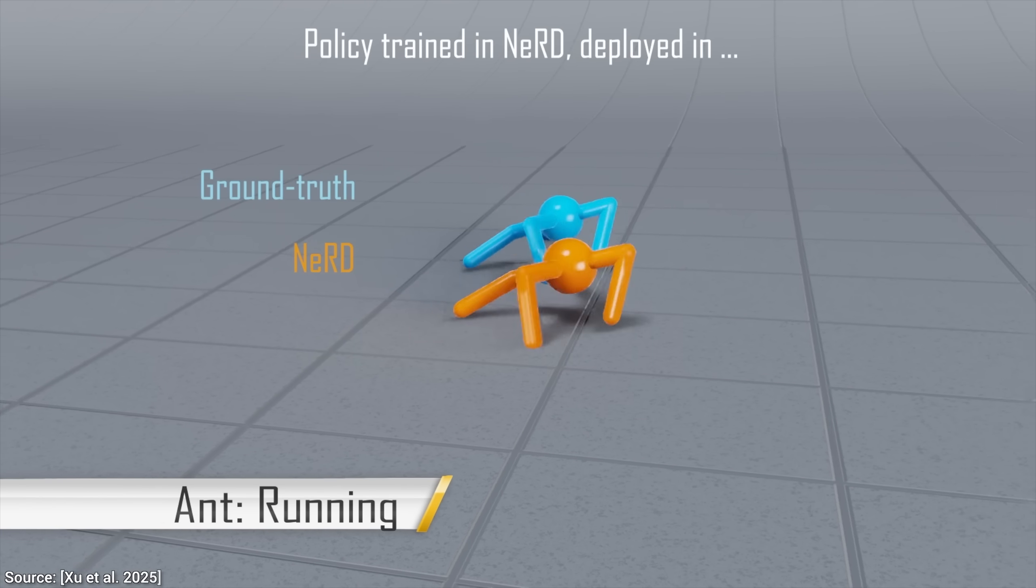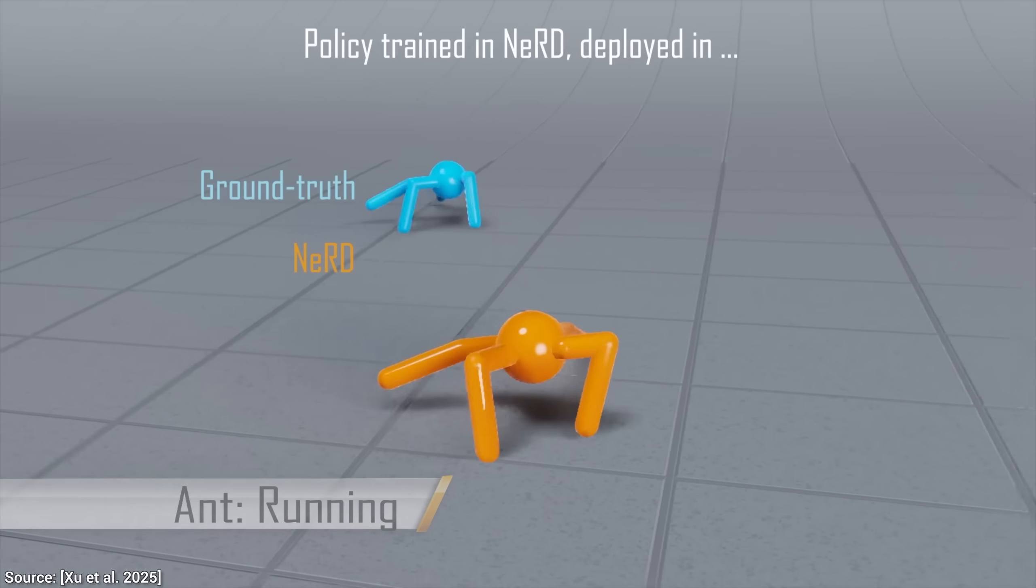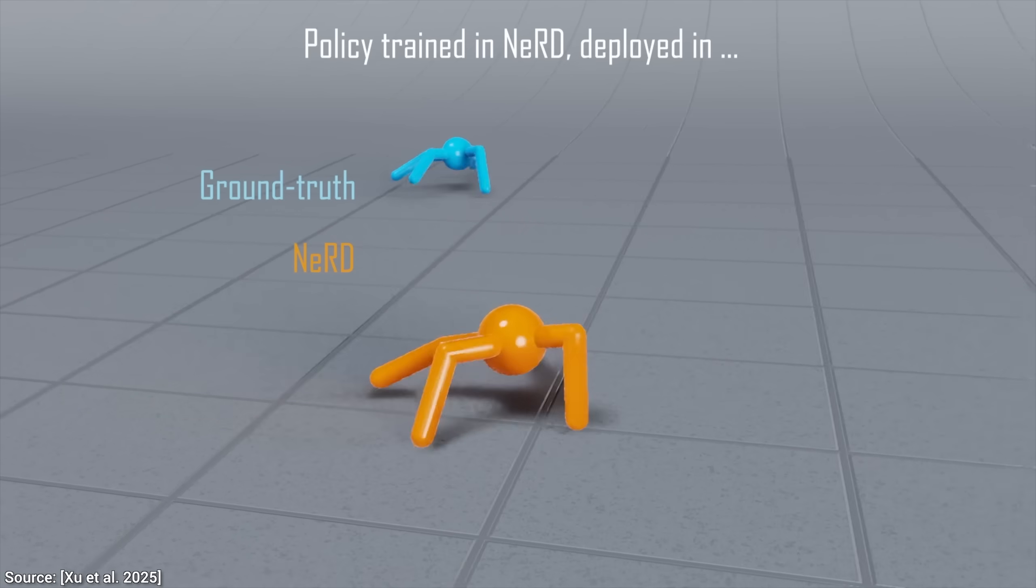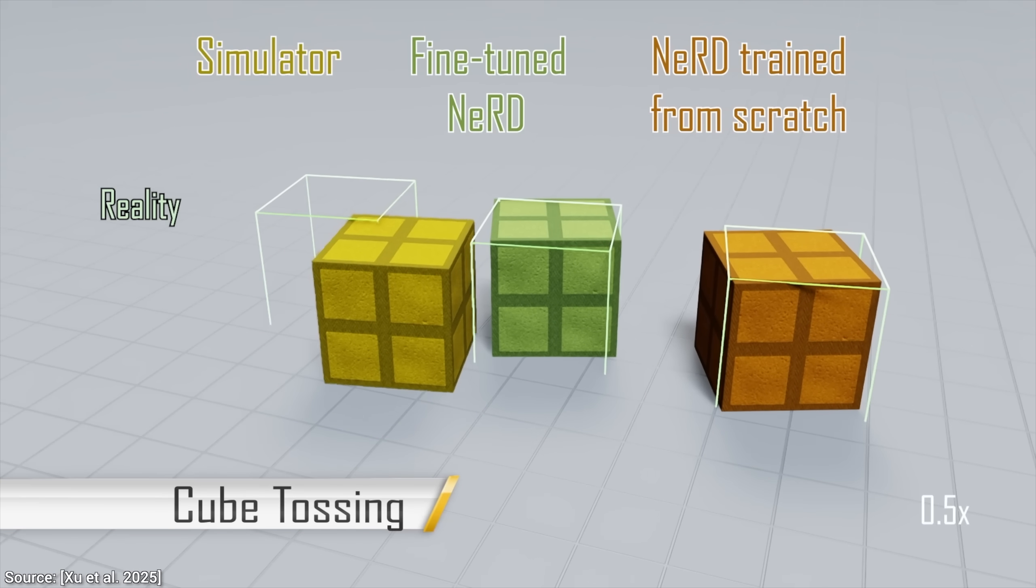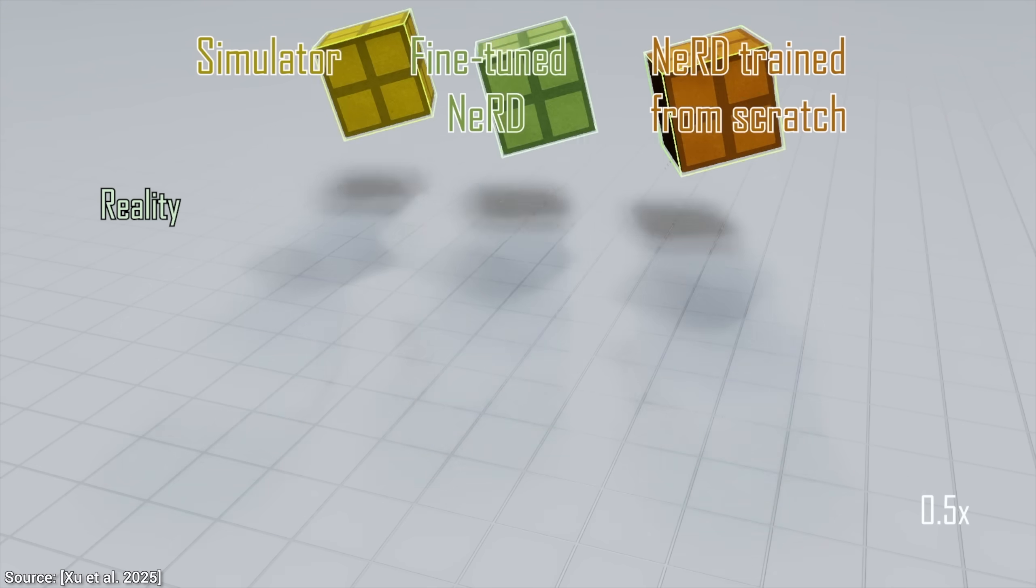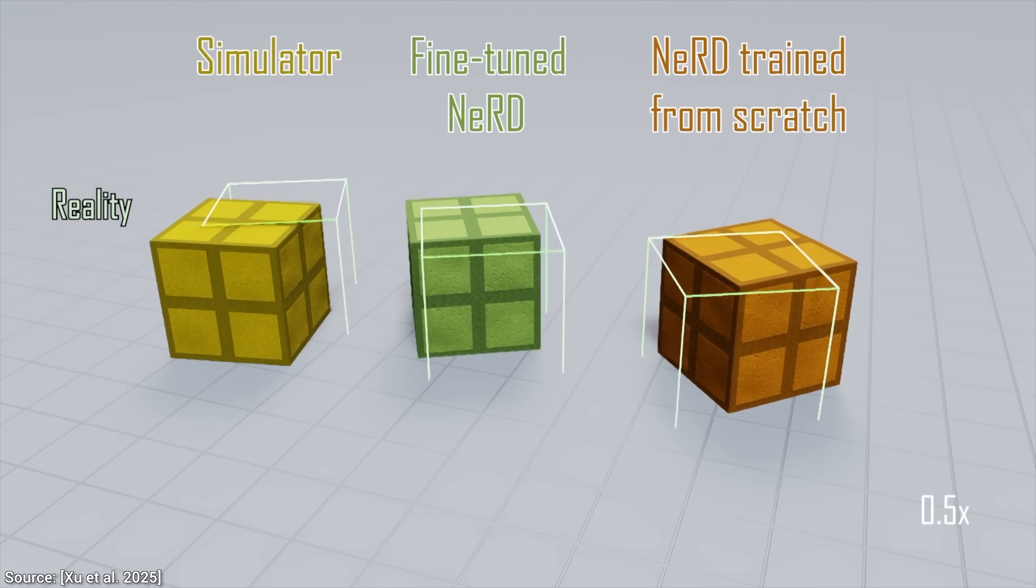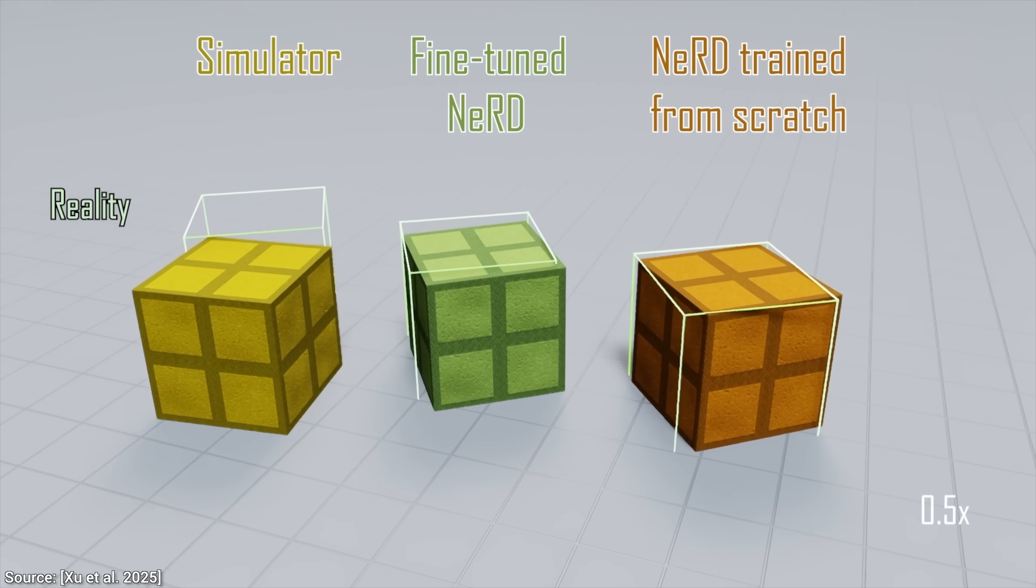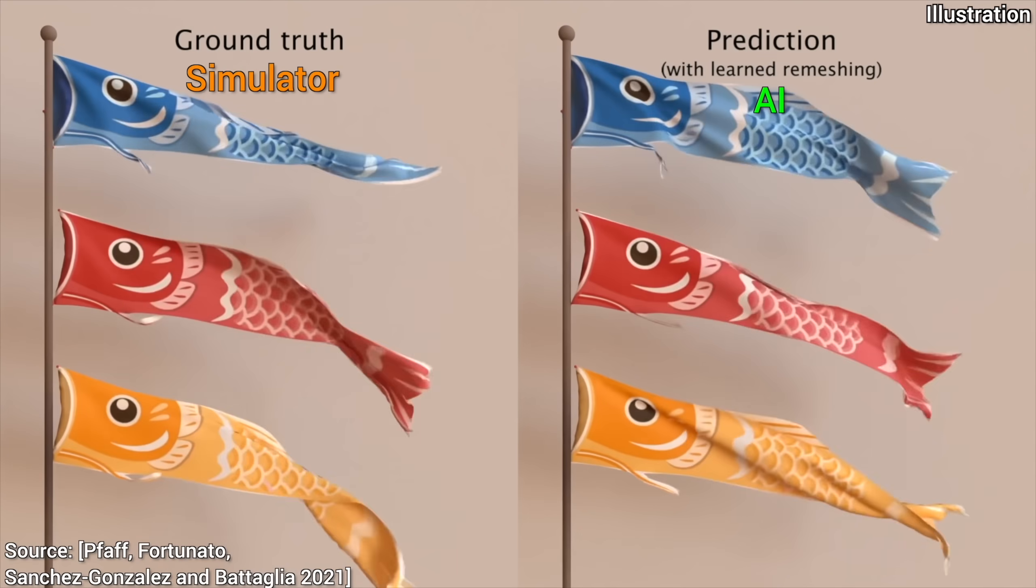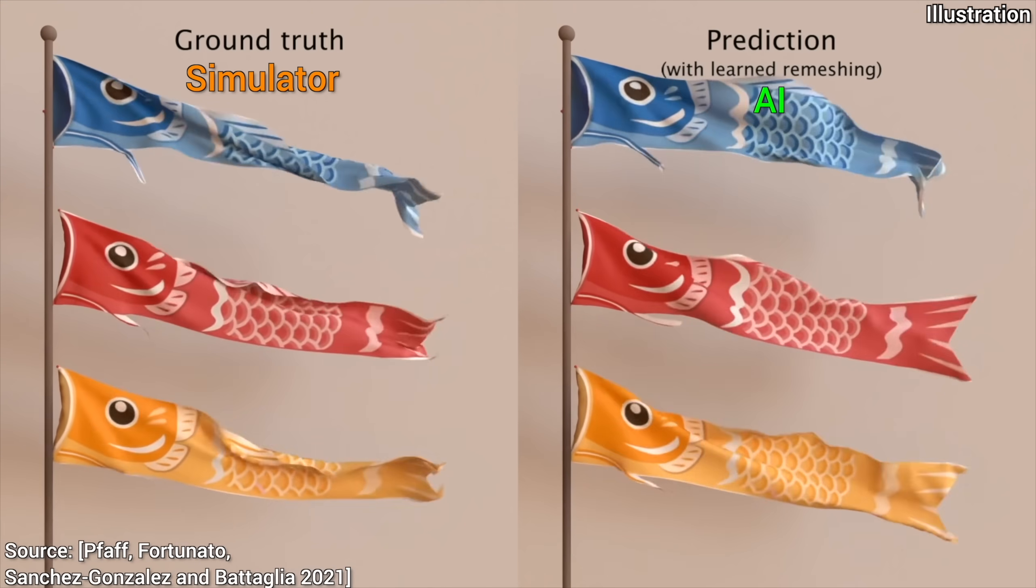And here's something that made me fall off the chair. They fine-tuned this AI on real-world cube tossing data. Here, a cube is being thrown, and it hits the ground. So what's so interesting about that? Well, nerd meshed it better than the physics simulator called Warp that created it in the first place. The student just beat the teacher. Whoa!